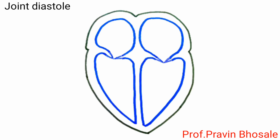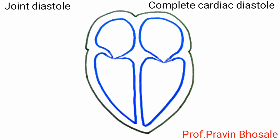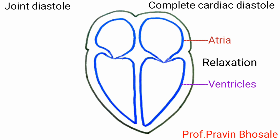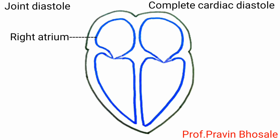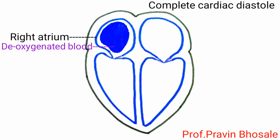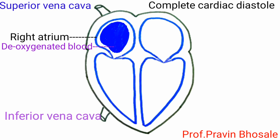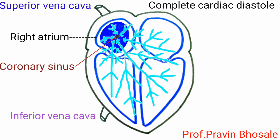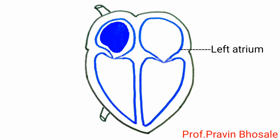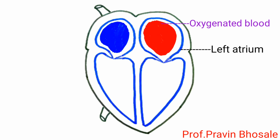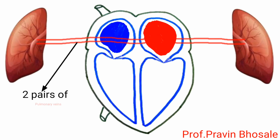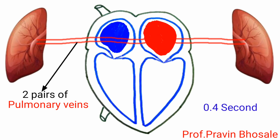During joint diastole, or complete cardiac diastole, both atria and ventricles undergo relaxation. The right atrium receives deoxygenated blood from all parts of the body through the superior vena cava, inferior vena cava, and coronary sinus. The left atrium receives oxygenated blood from the lungs through two pairs of pulmonary veins. Joint diastole lasts for 0.4 seconds.